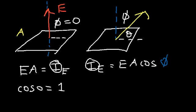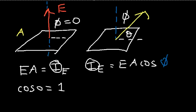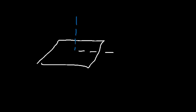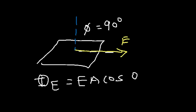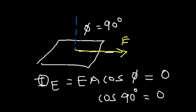The electric flux has its maximum value when this angle is zero. Now what happens if the electric field vector is parallel to the surface, or perpendicular to the normal line? In that case the angle between the normal line and the electric field is 90 degrees. The electric flux is EA cosine 90, and cosine 90 equals zero, so the electric flux is zero.